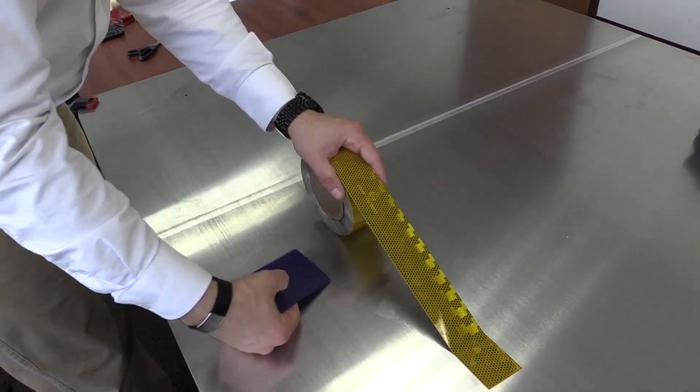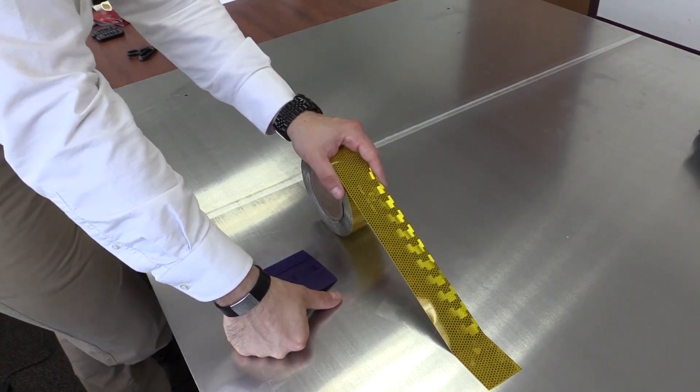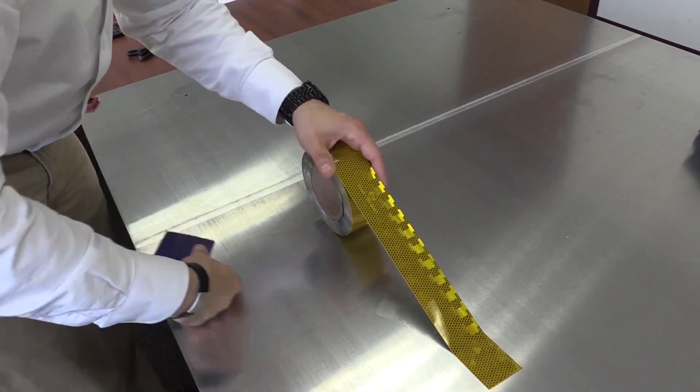One thing you want to avoid is using a raw squeegee or a bare squeegee just because it will scratch or mar the surface, which can affect the reflectivity or life of the product.